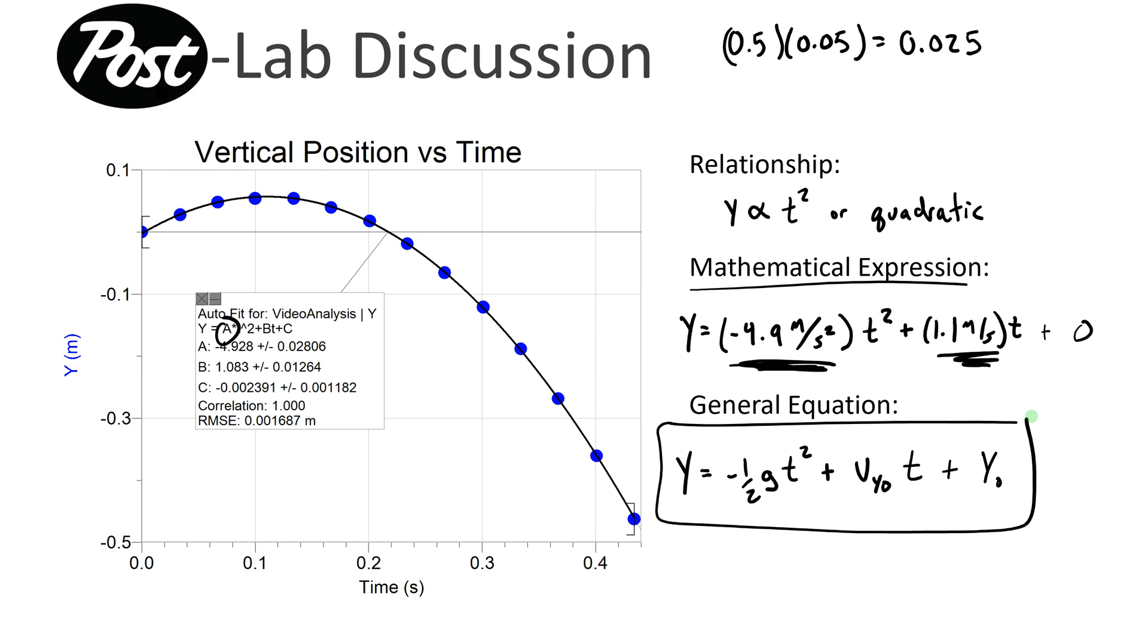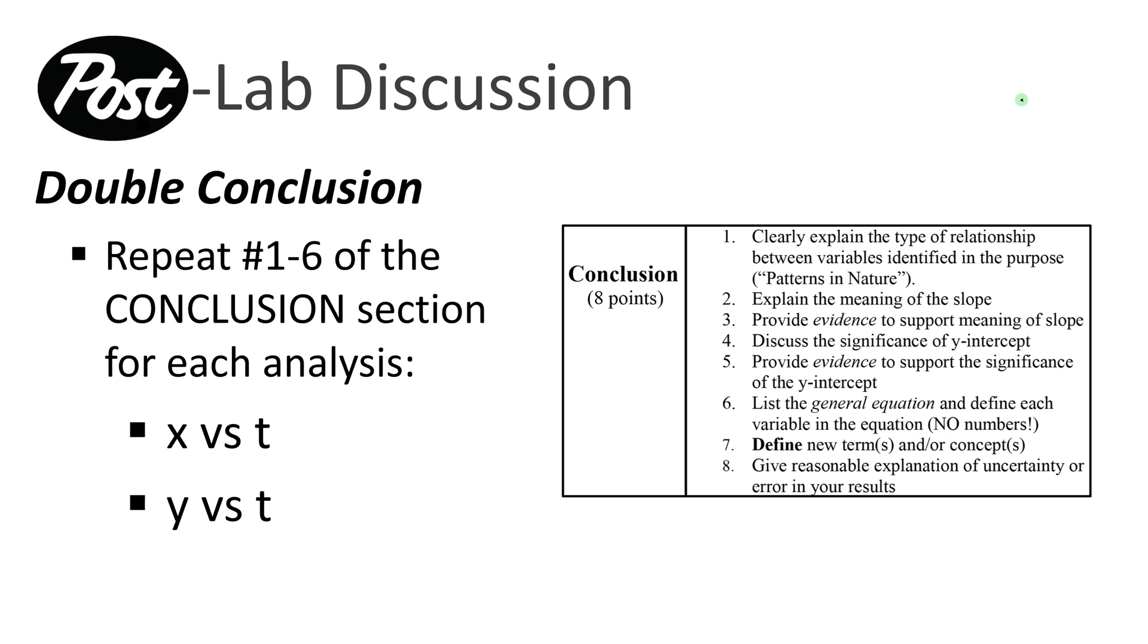Now again, remember your analysis, you're going to have this graph, the vertical position versus time and also the horizontal position versus time graphs doing a double analysis, and you'll also go through each conclusion separately and go through all these different things. So the conclusion really is only different for one through six, which means you only have to go through numbers one through six separately for x versus t and y versus t. You could do this like analysis for x versus t, y versus t, then conclusion for x versus t and y versus t. Or if you want to do them like the analysis and the conclusion for x, then the analysis and conclusion for y, that's totally fine with me.